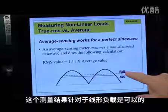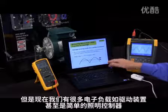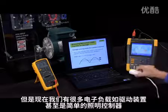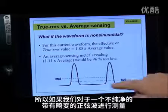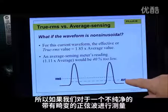This was fine when we had a world of nothing but linear loads. Nowadays, we have a lot of electronic loads such as drives and even simple lighting controls. So if we take a reading on a signal that is not a clean sine wave that has some distortion in it,